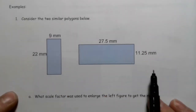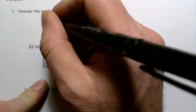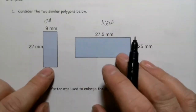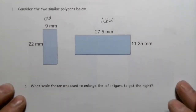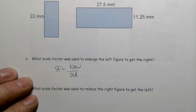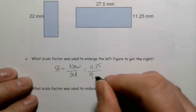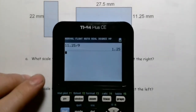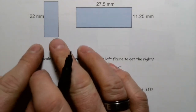Consider two polygons: what scale factor was used to enlarge the left figure to get the right? The left is old and the right is new. Comparing widths using scale factor equals new over old: the new width is 11.25 mm and the old width is 9 mm. So 11.25 divided by 9 gives a scale factor of 1.25.